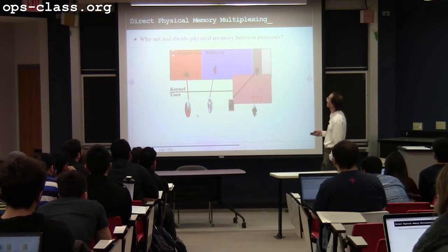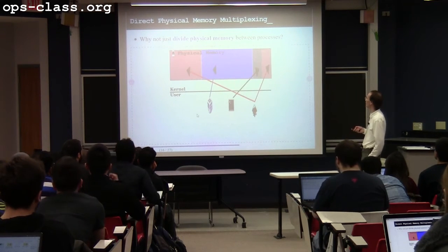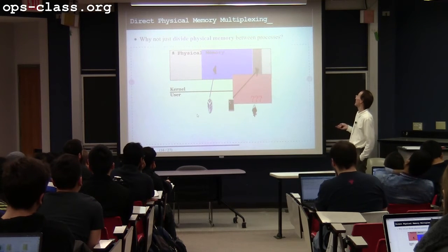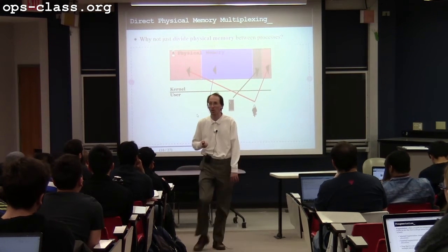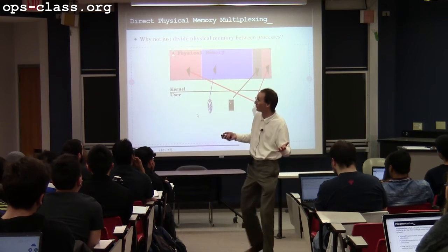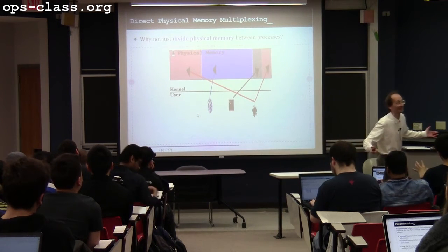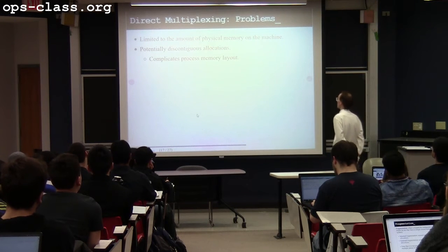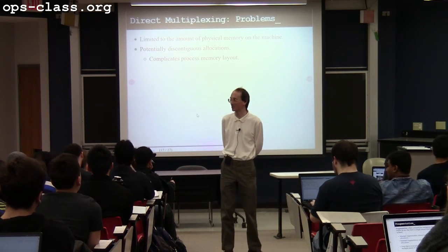Another problem: let's say one process goes away and we want to expand another process. We can give it that freed chunk of memory — but the problem is it's not contiguous. We as smart programmers can get around this, but it's a pain. Non-contiguous memory complicates process memory layout. To the extent we can avoid discontinuousness, we want to.